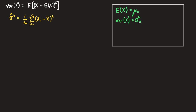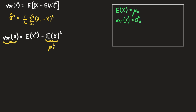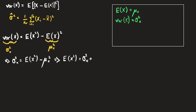We write the expectation of x as μx and the variance of x as σ²x. The variance of x equals either E[(x - E[x])²] or E[x²] - (E[x])². The term (E[x])² is just μx². So we can write σ²x = E[x²] - μx², which rearranges to give us E[x²] = σ²x + μx².